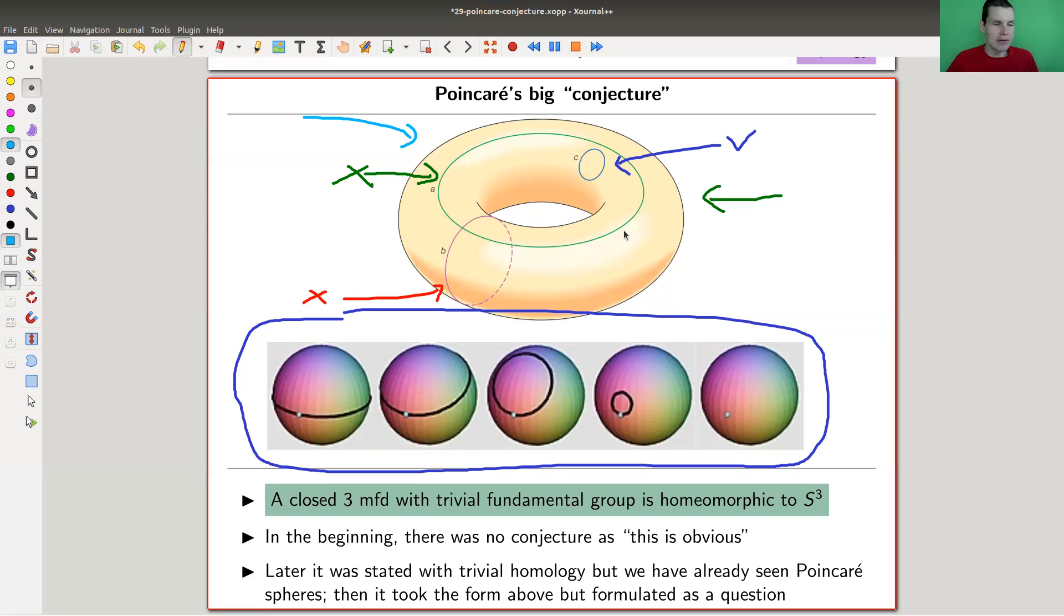In the beginning there was actually no conjecture because Poincaré thought this is obvious. Later Poincaré found those homology spheres, which are really tricky objects we had in one of the videos.